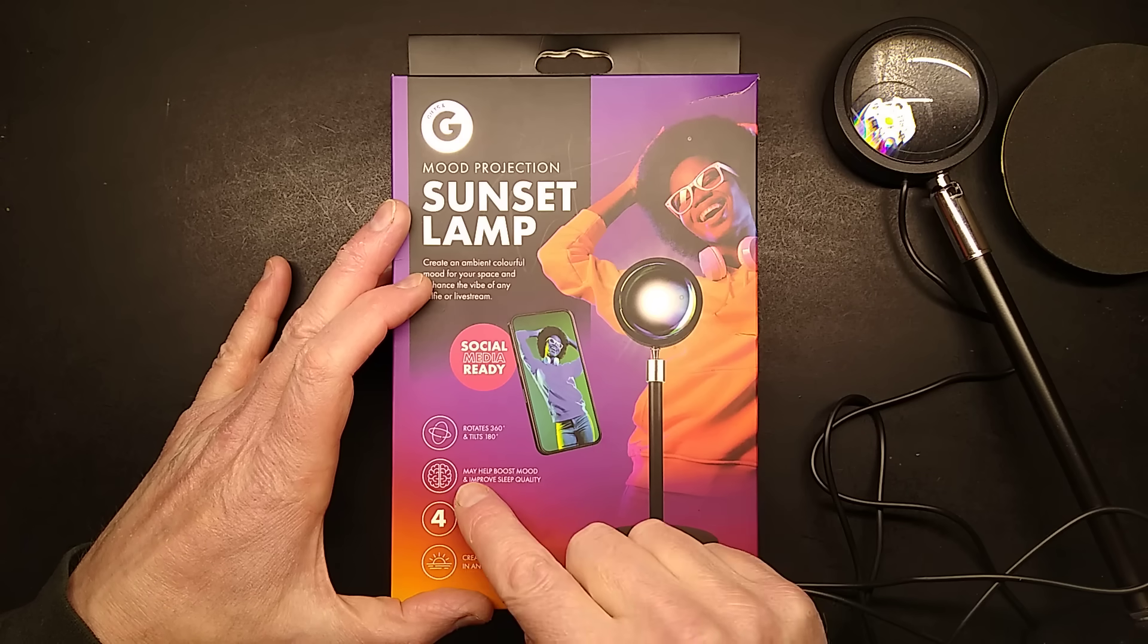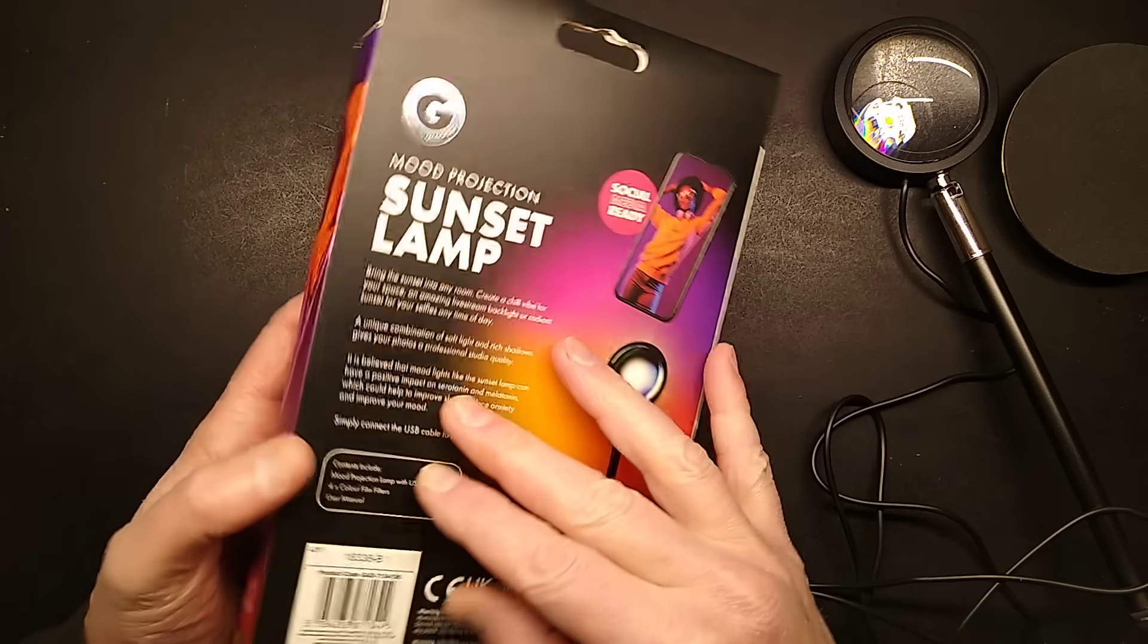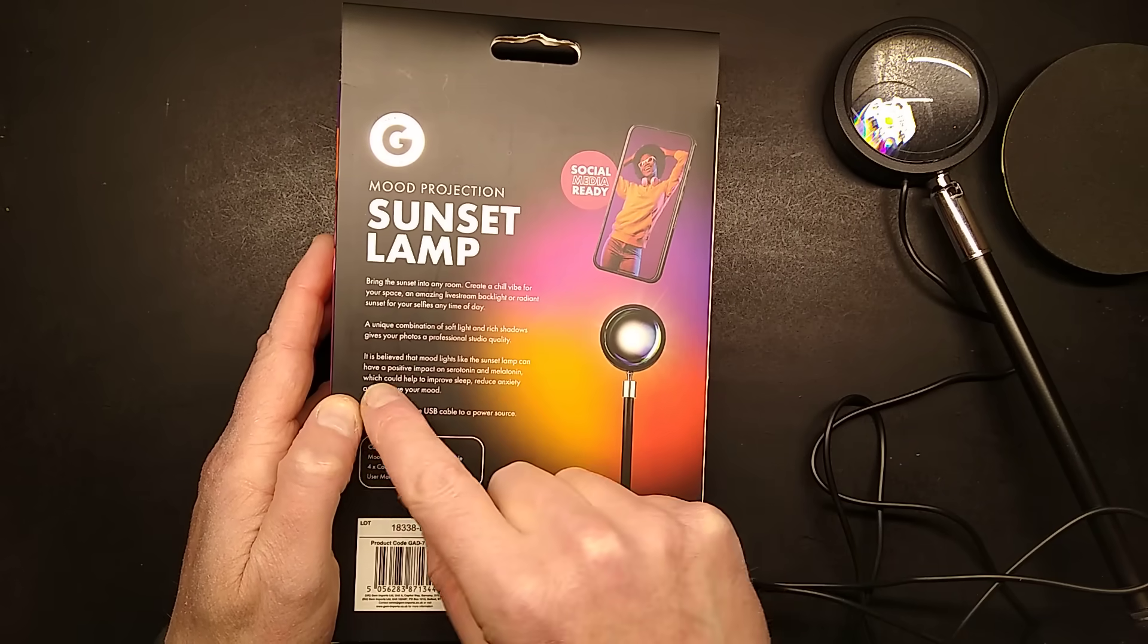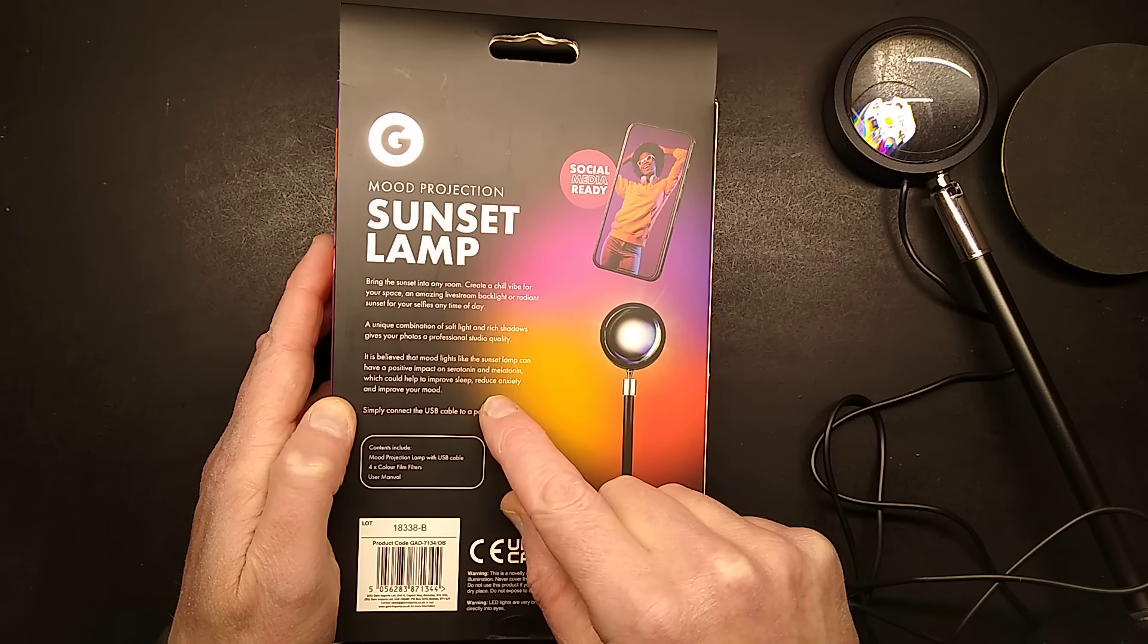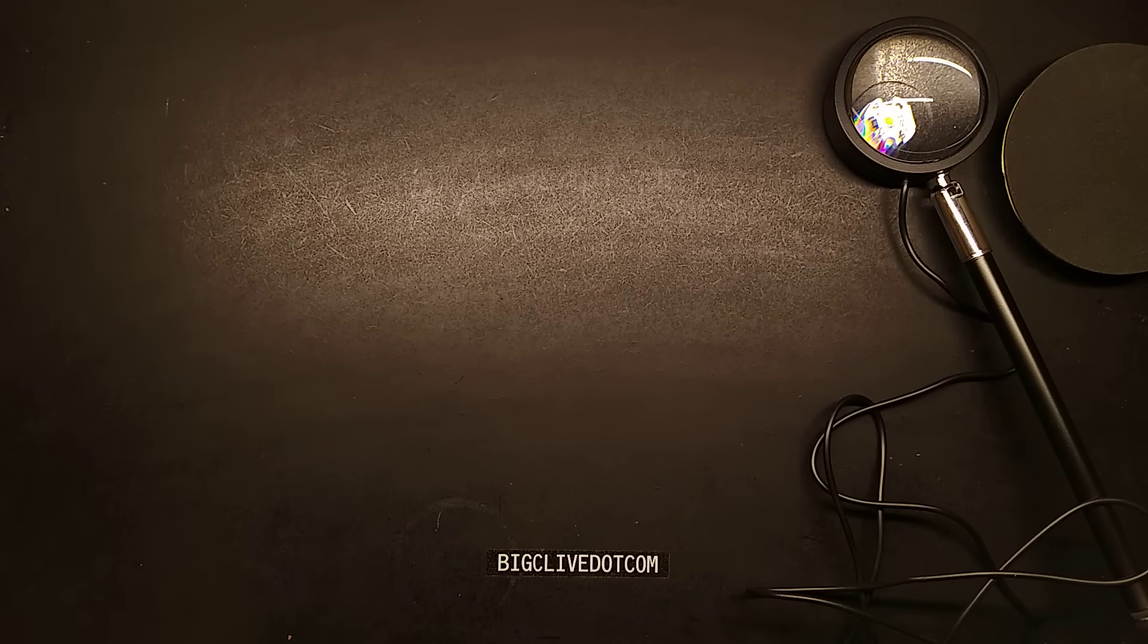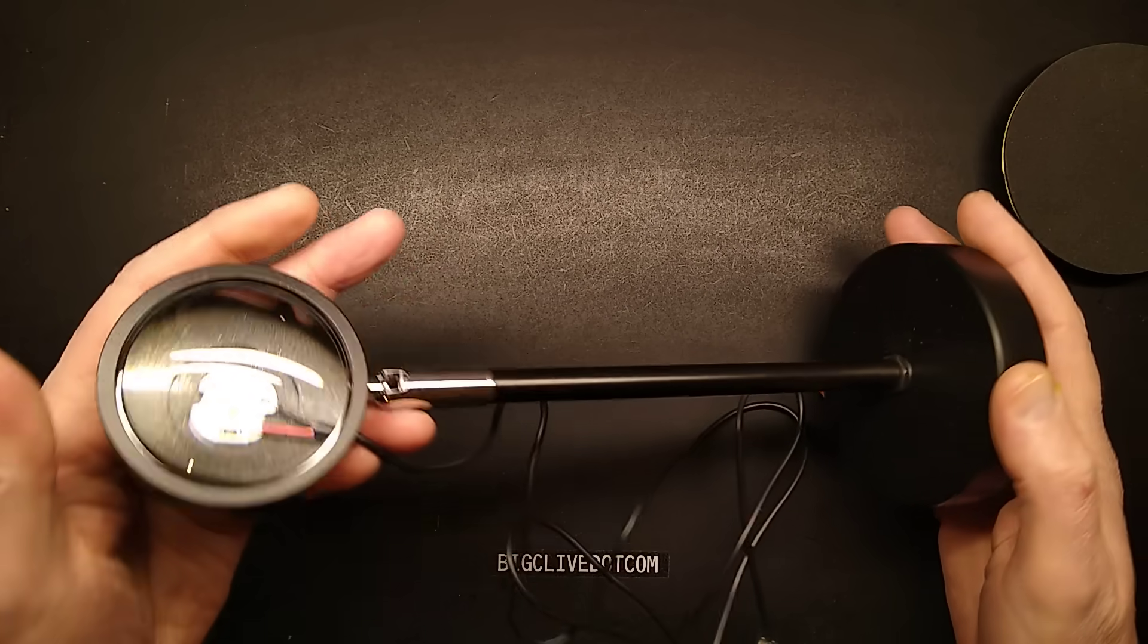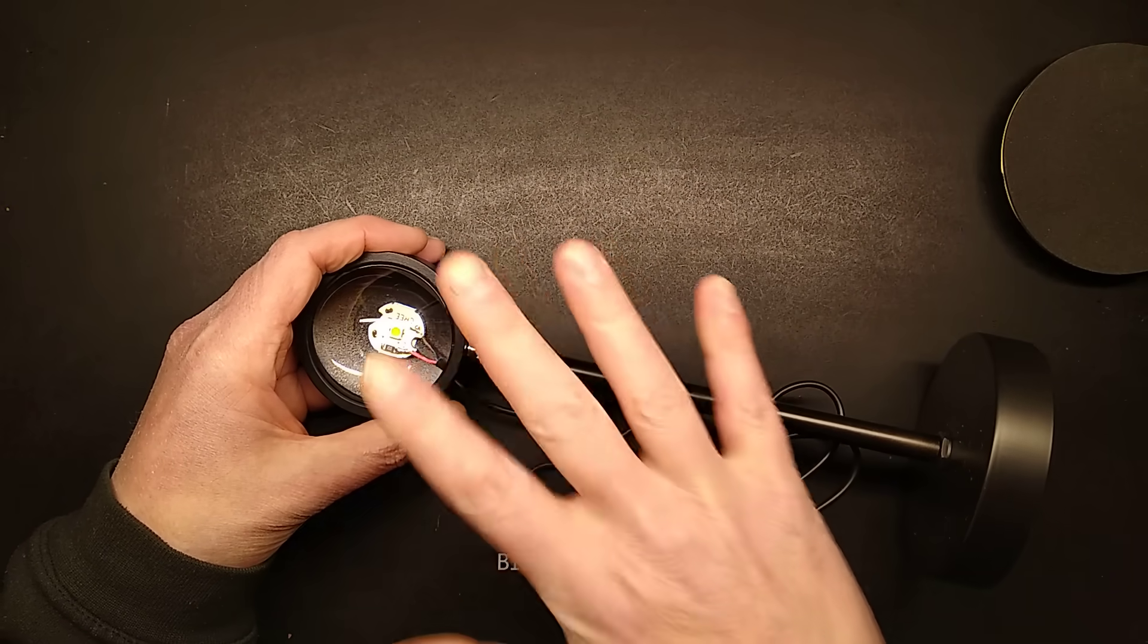It then makes a rather bold claim: may help boost mood and improve sleep quality. Then justifies that by saying it is believed that mood lights like the Sunset Lamp can have a positive impact on serotonin and melatonin, which could help to improve sleep, reduce anxiety and improve your mood. That said, the light itself came in at four pounds for the whole thing, which is just stunning for the components because you can do a lot with this.